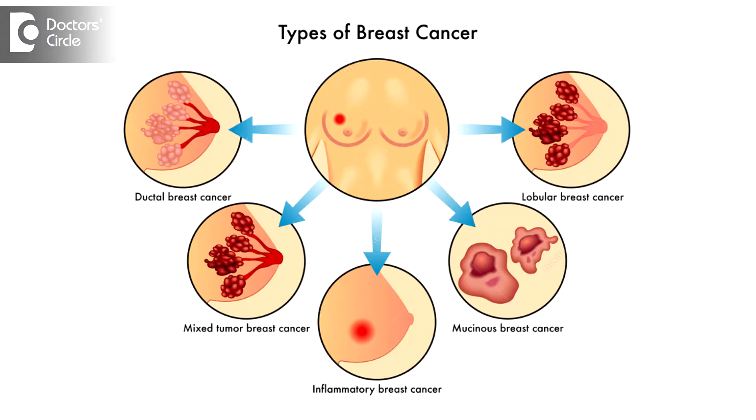From the cellular point of view, breast cancer is classified into cancer cells that confine themselves to the ducts of the breast itself — that is called ductal carcinoma in situ (DCIS). That means the cells have not gone beyond the breast ducts.